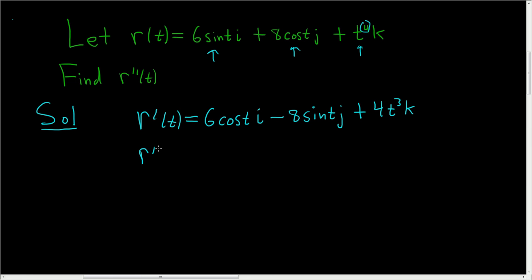We're ready to take the second derivative. So the second derivative. The derivative of cosine is negative sine. So this is negative 6 sine t i.